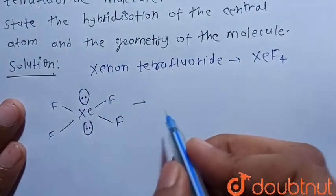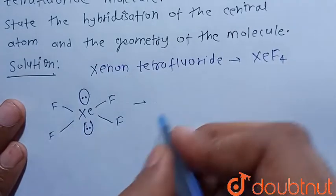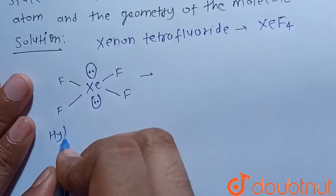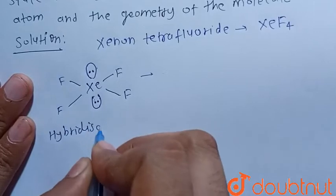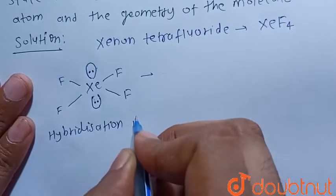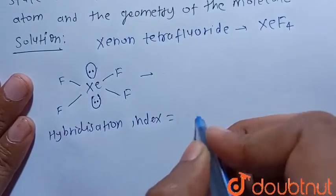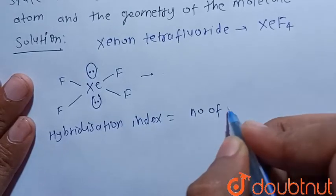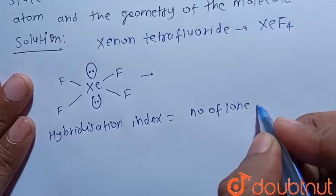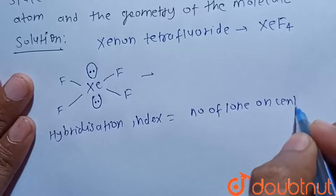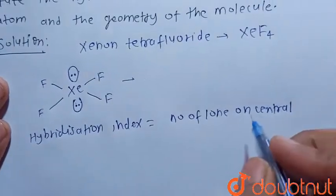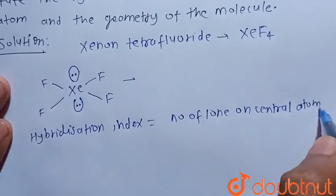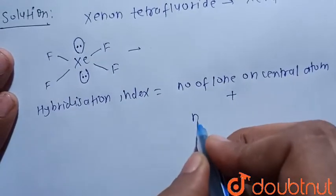So its hybridization would be... We know that hybridization index is calculated as the number of lone pairs on central atom plus number of sigma bonds.